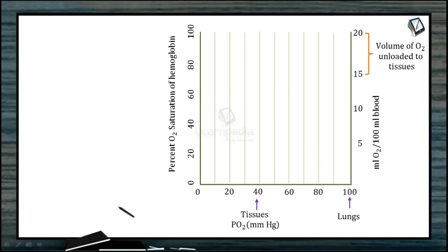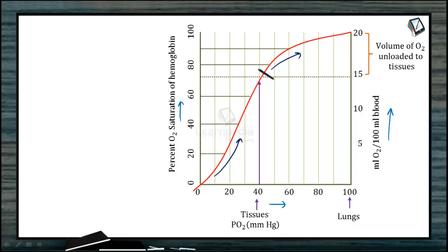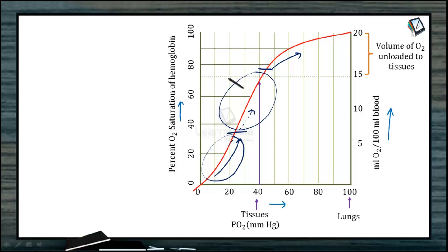Now let's learn this graph with all the values. On the x-axis is the partial pressure of oxygen, on the y-axis is percentage of saturation, and on the right-hand y-axis is ml of oxygen per 100 ml of blood. First, note that the graph is sigmoid. There is a slow rise initially, but at a certain point there is a very steep rise. This steep rise shows that initial oxygen molecule binding enhances later binding — this is called the allosteric phenomenon, which always produces a sigmoid curve.